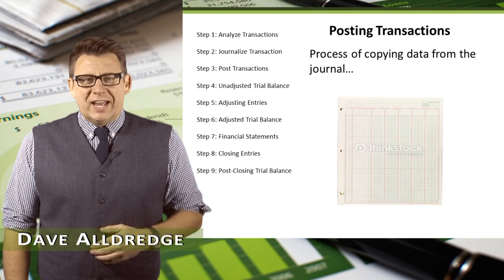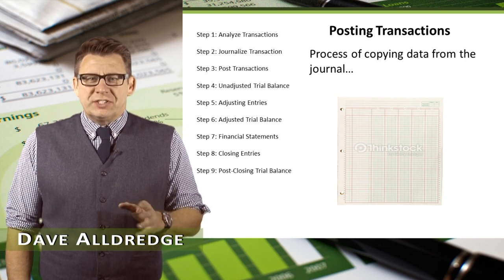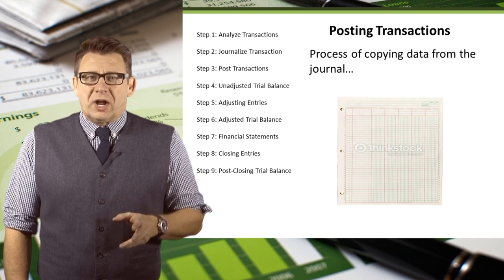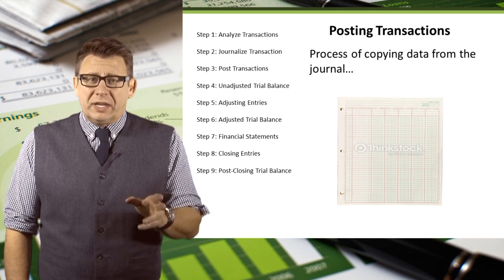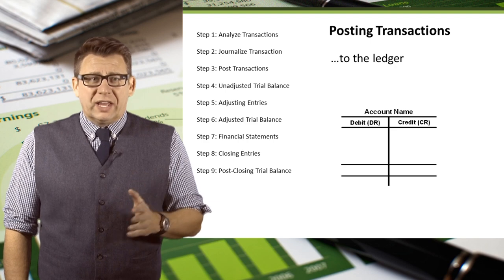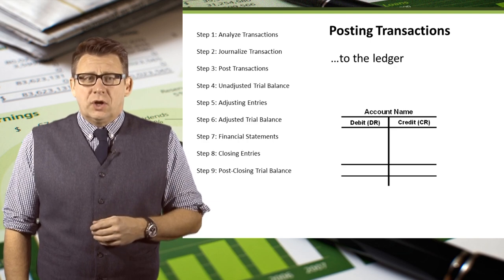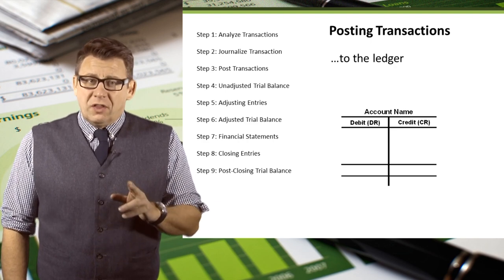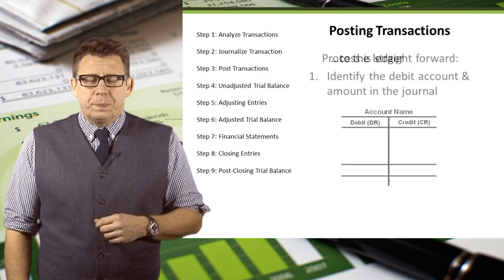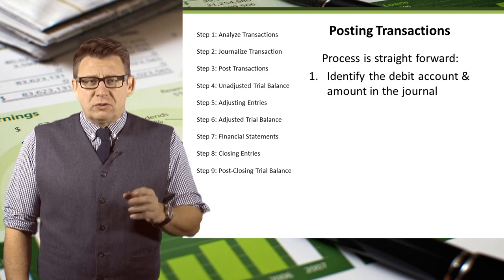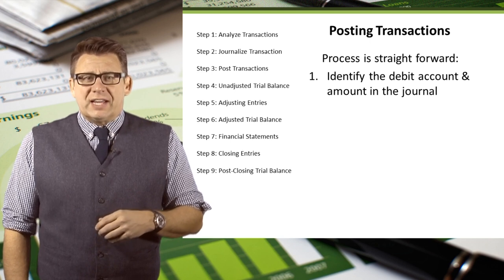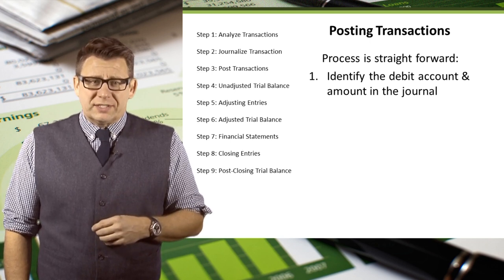The third step in the accounting cycle is posting transactions from the journal to the ledger. This is a process of copying data from the journal to the ledger, which in accounting we show as the T-account. Recall that debits are always on the left and credits are always on the right. The process of posting is fairly straightforward — I would suggest that you don't overthink the process.